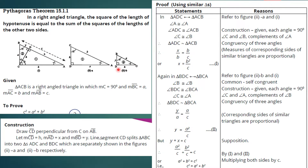For the proof, we consider triangle ADC and triangle ACB as corresponding triangles. The first statement is: angle A in triangle ADC is congruent to angle A in triangle ACB, because angle A is common to both triangles and its measure has not changed.